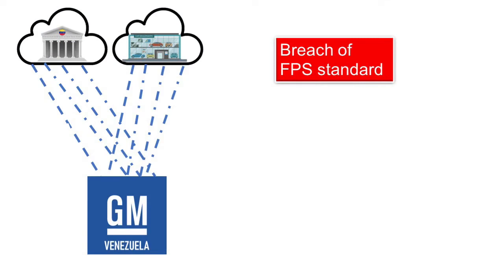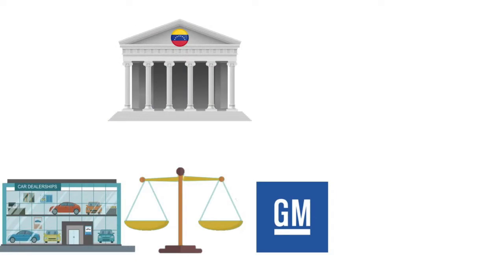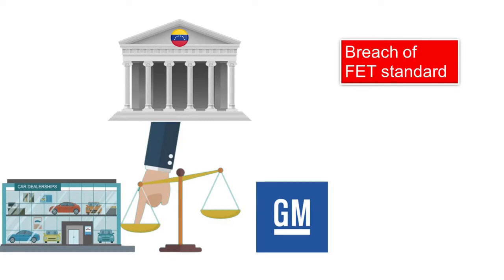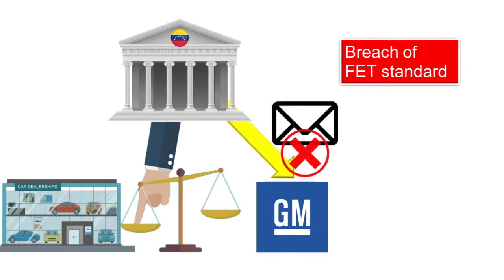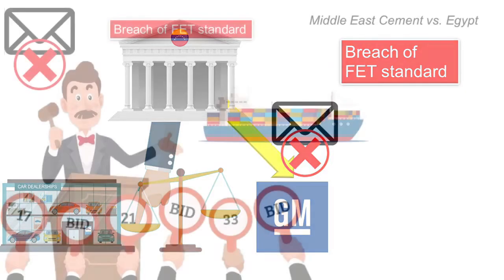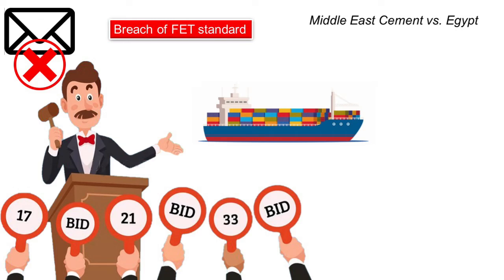Undeniably, not only did Venezuelan courts omit any protection for GM Spain's investment in Venezuela, but they also deliberately took actions that adversely affected GM Spain's investments. As to Article 4 of the Spain-Venezuela BIT, Venezuela violated the Fair and Equitable Treatment Standard through her judiciary to the extent that her courts failed to ensure a fair and equitable procedure to GM Spain's investment in Venezuela, that is, GM Venezuela. By failing to notify GM Venezuela of an enforcement procedure taking place seven years after the issuance of the allegedly corresponding judgment, Venezuela caused the foreign investor denial of justice. In Middle East Cement v. Egypt, an ICSID tribunal concluded that the respondent state breached the FET Standard by failing to notify the investor of the seizure and auctioning of a ship belonging to the investor.